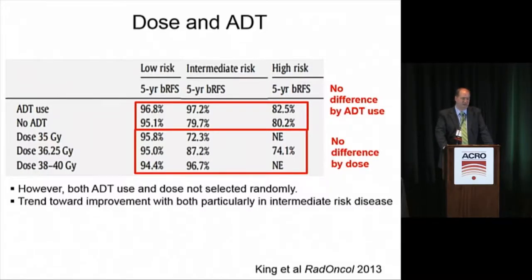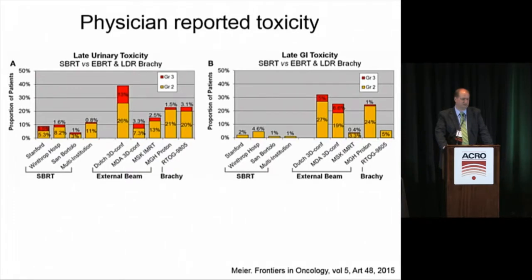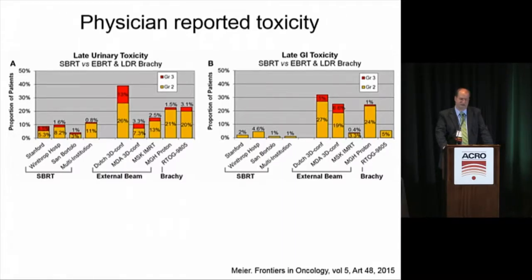Univariate analysis looked at androgen therapy use and dose to see if there was a relationship. They found no statistically significant difference for androgen therapy use and no statistically significant difference for radiation dose. However, androgen therapy and dose were not randomly selected, so if you look at differences in intermediate-risk disease, it seems to suggest there might be a dose response and an androgen response — and intermediate-risk patients are not all the same.